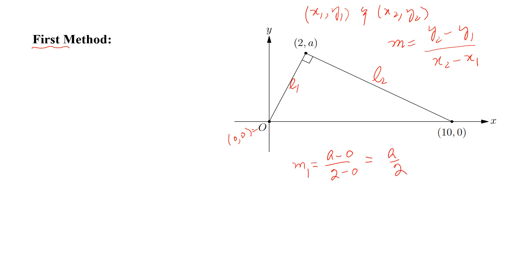This is M1. Now M2 equals 0 minus A divided by 10 minus 2, which equals minus A divided by 8. This is M1 and this is M2.